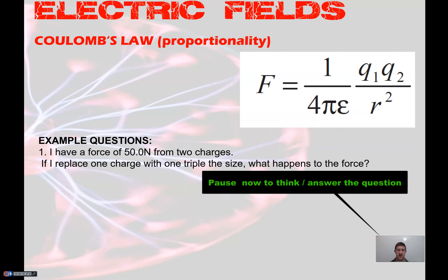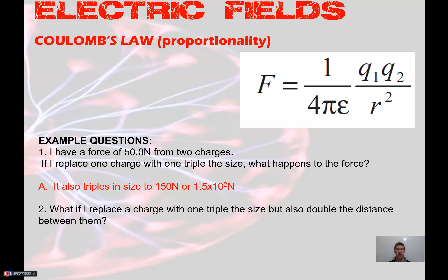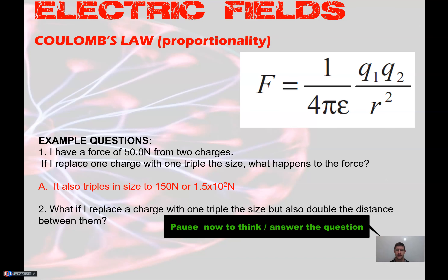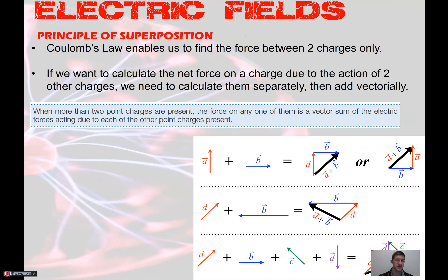For example: if you have a force of 50 newtons from two charges and replace one charge with something triple the size, the force also triples to 150 newtons, because force and charge are directly proportional. Now if you triple the charge but also double the distance, the force triples but is also reduced by a factor of four due to the r-squared term. So you end up with three-quarters of 50 newtons, which is 37.5 newtons.